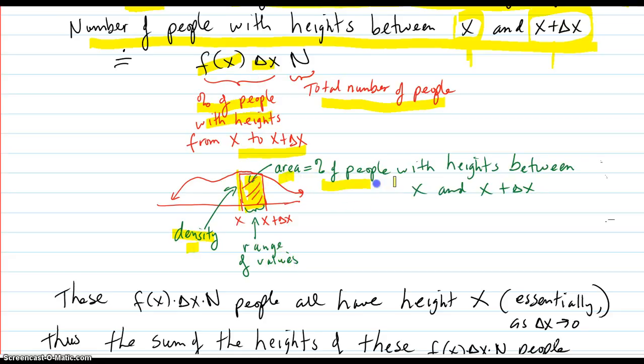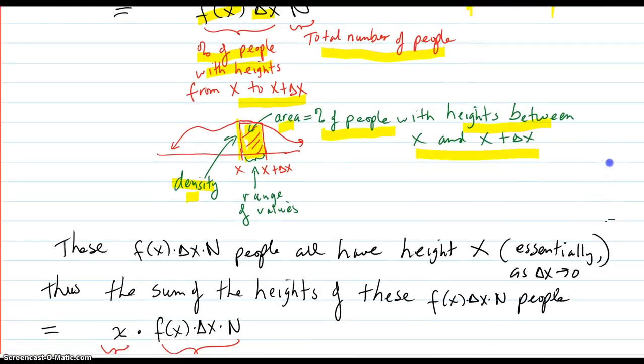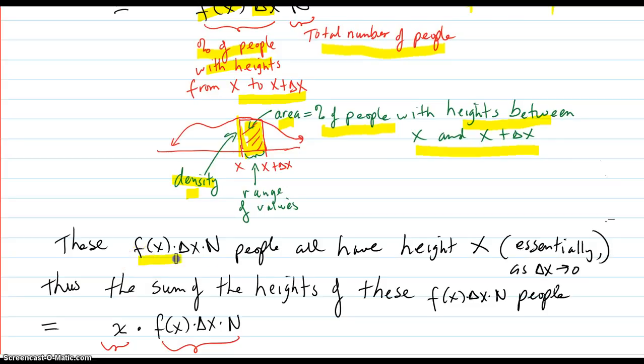represents the area, which is the percent of people with heights between x and x plus delta x. So those amount of people all have height x, essentially. Of course,